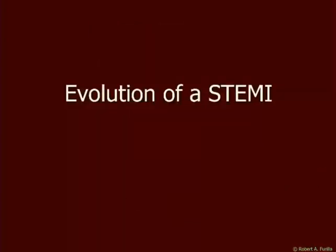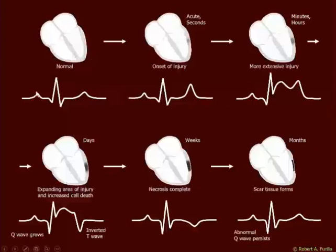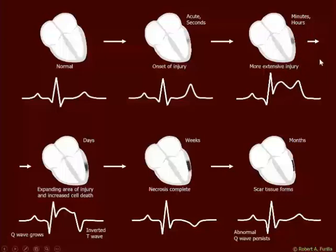Let's look at the evolution of a STEMI. Starting with a healthy heart, at the onset of injury we see a hyperacute T wave — it looks more like a tent — and this happens acutely in seconds. You may never see it unless electrodes are placed on the patient at that moment. However, in the minutes to hours it takes for the patient to come to the emergency department, you will start to see the ST segment elevating, with more extensive injury and necrosis beginning to occur.